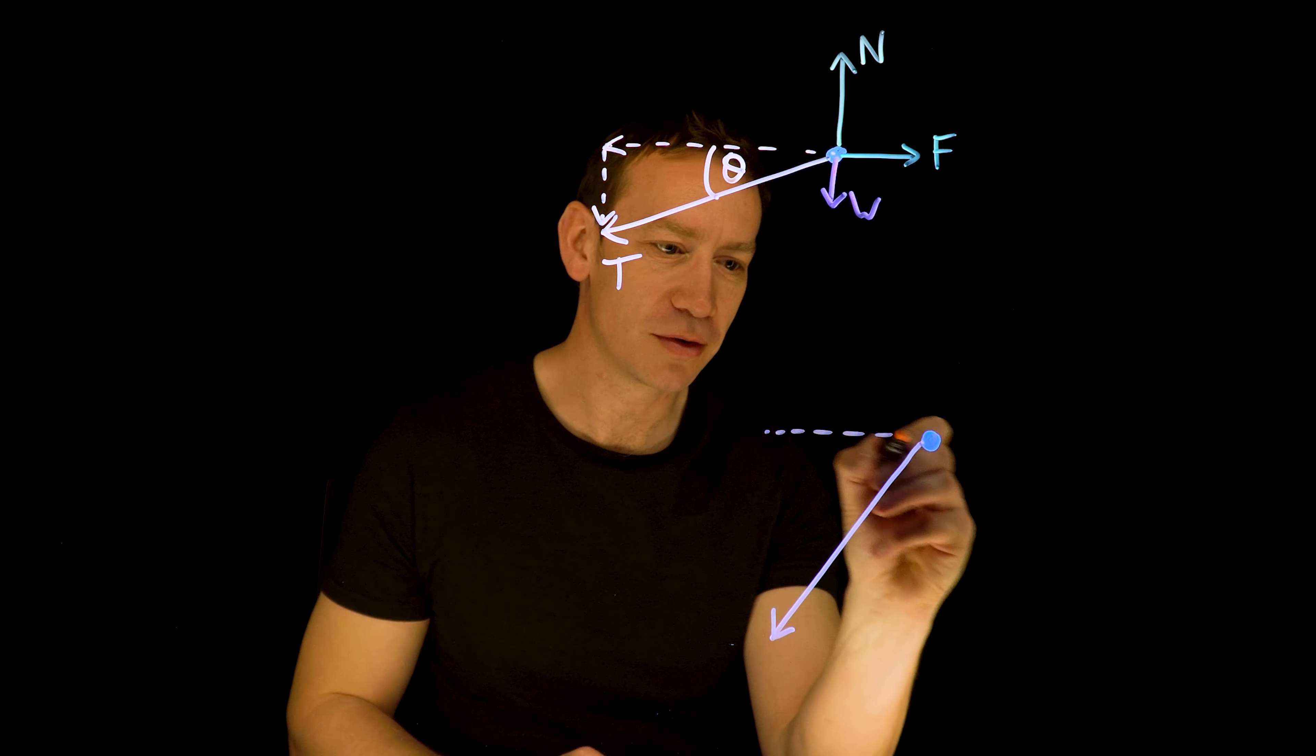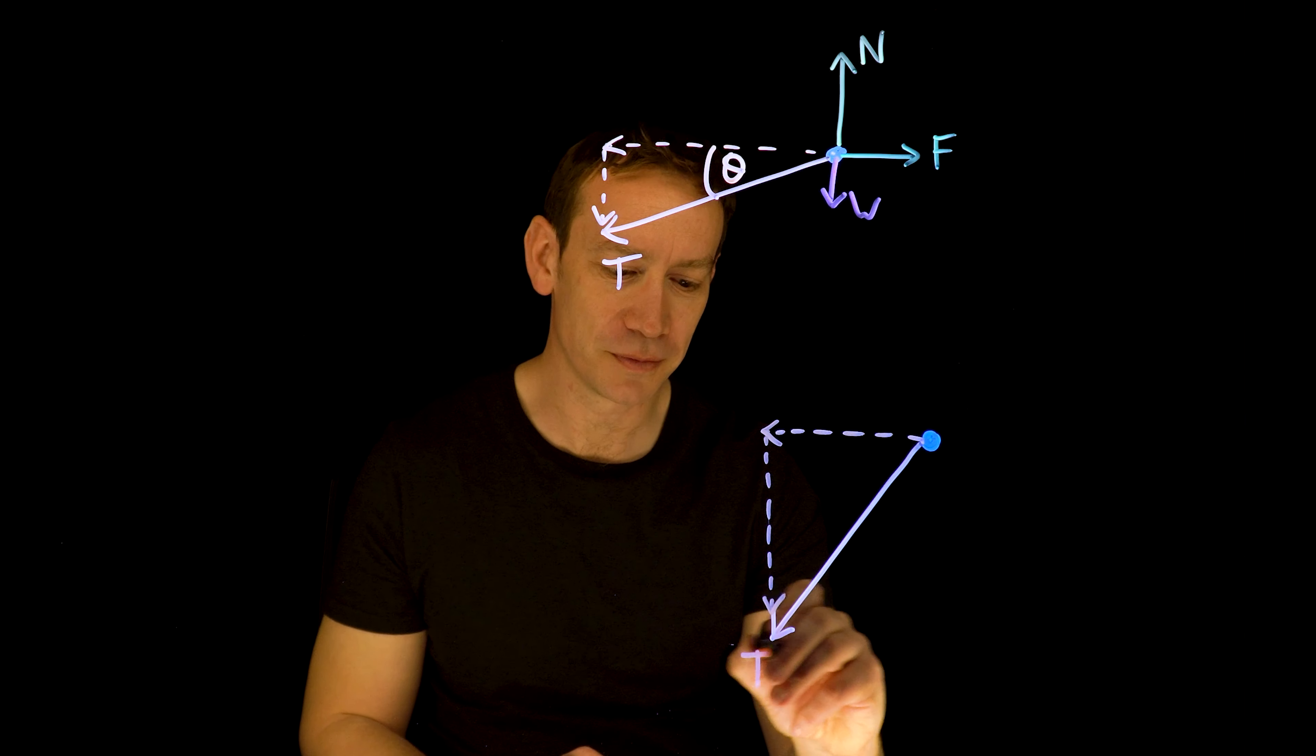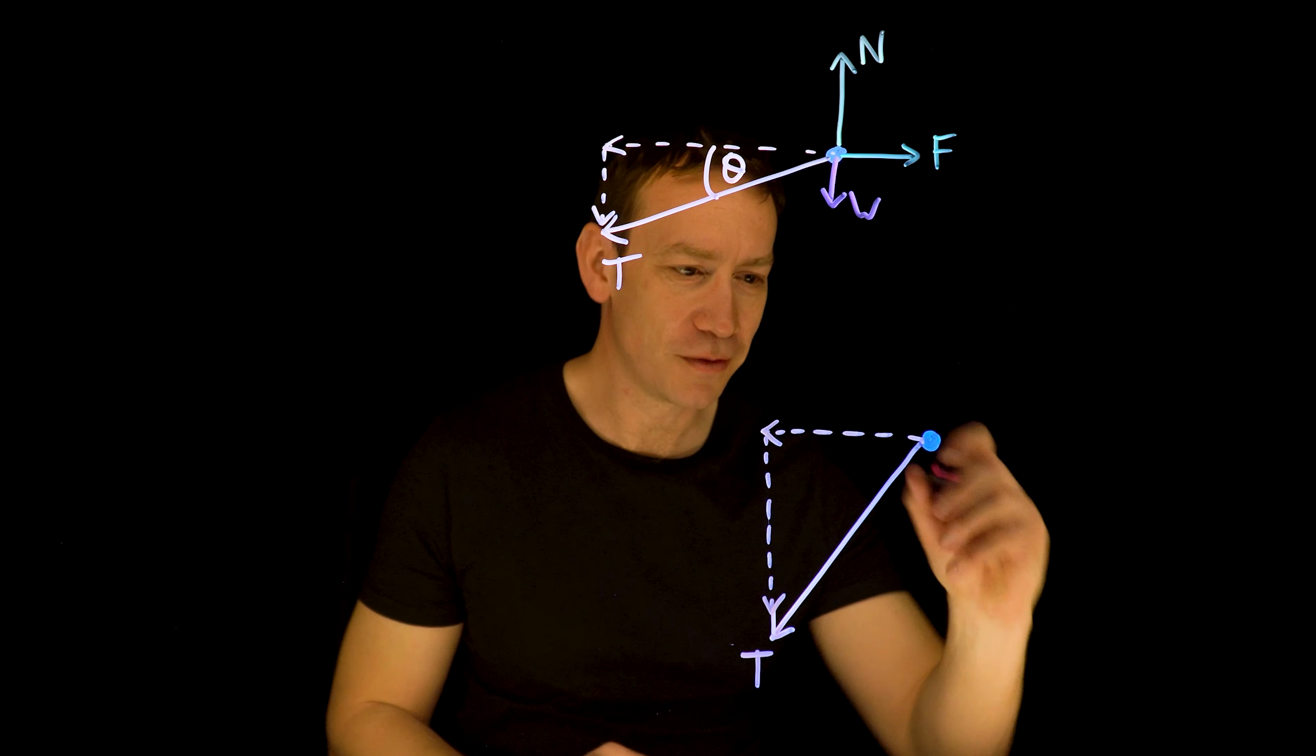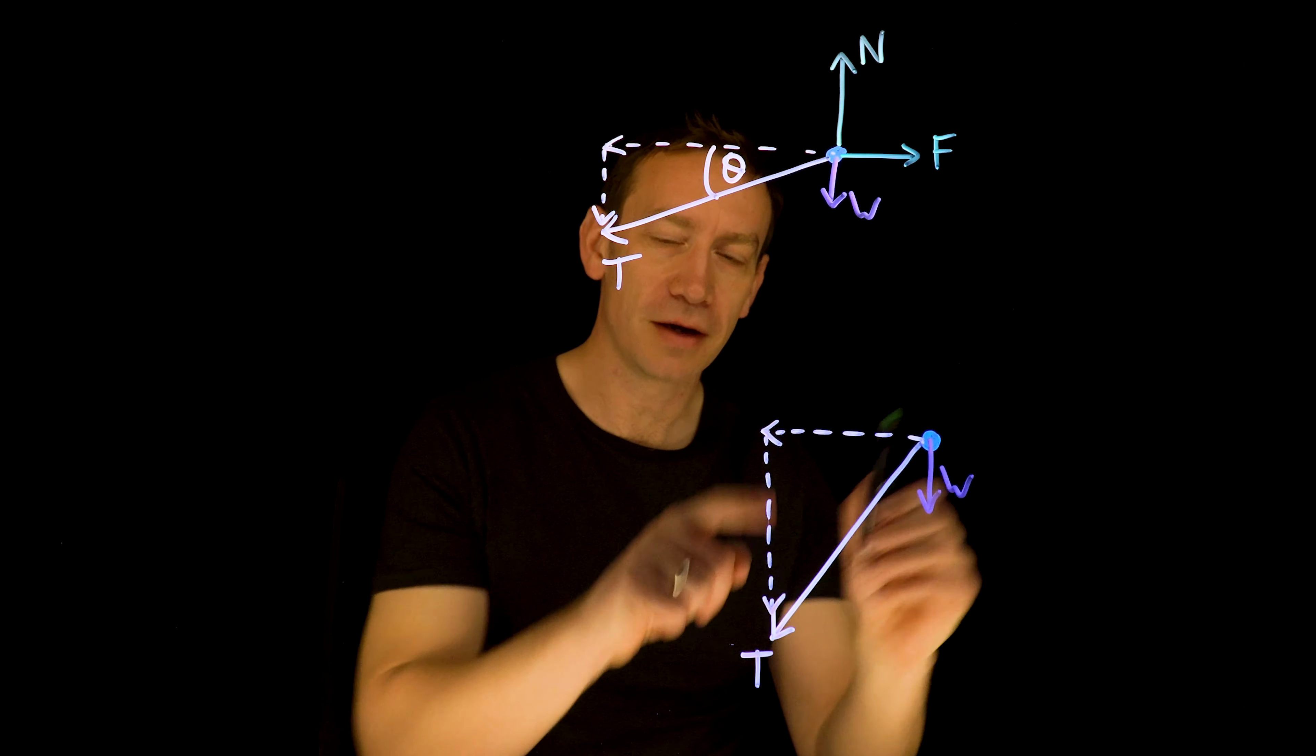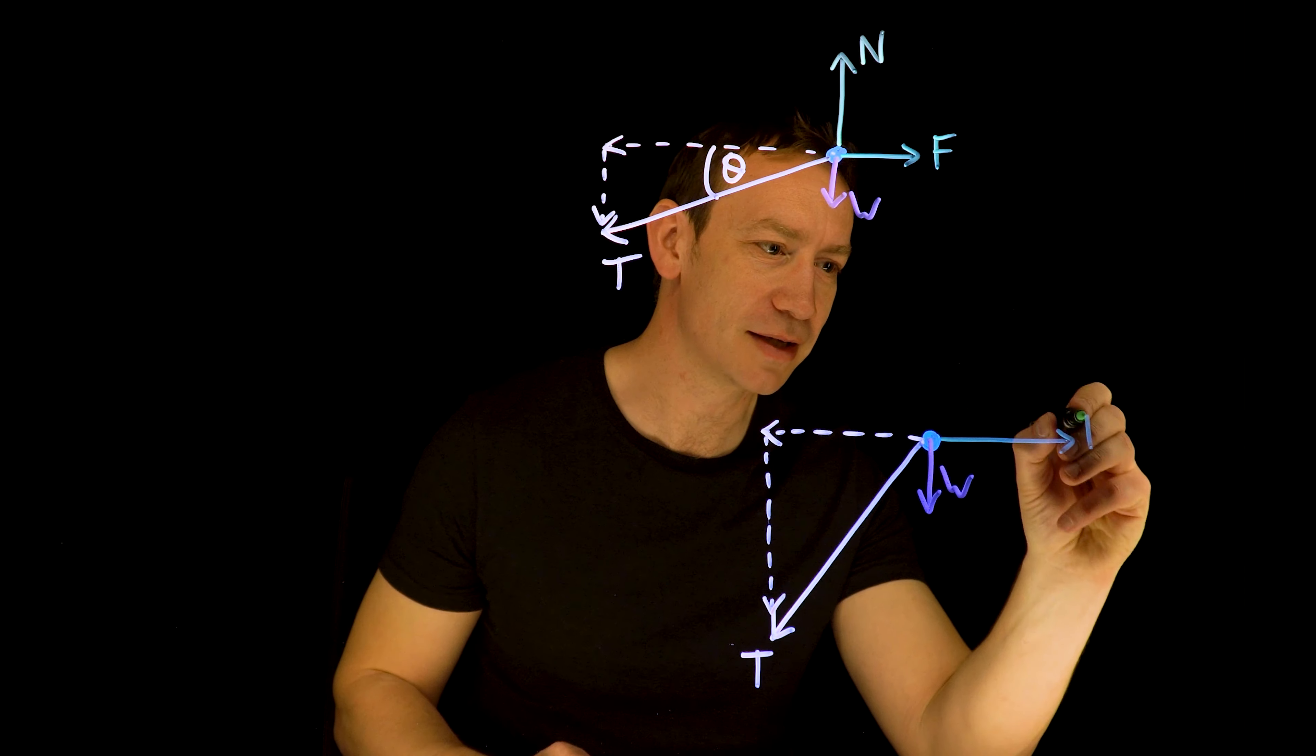Now again if we think about the horizontal component of that, and the vertical component of that tension force, we now have something which is again subtly different to what we had at the beginning. The other forces we have include the weight, and that's going to stay the same. But the size of the frictional force between the block and the table has increased. I'm going to call that F.